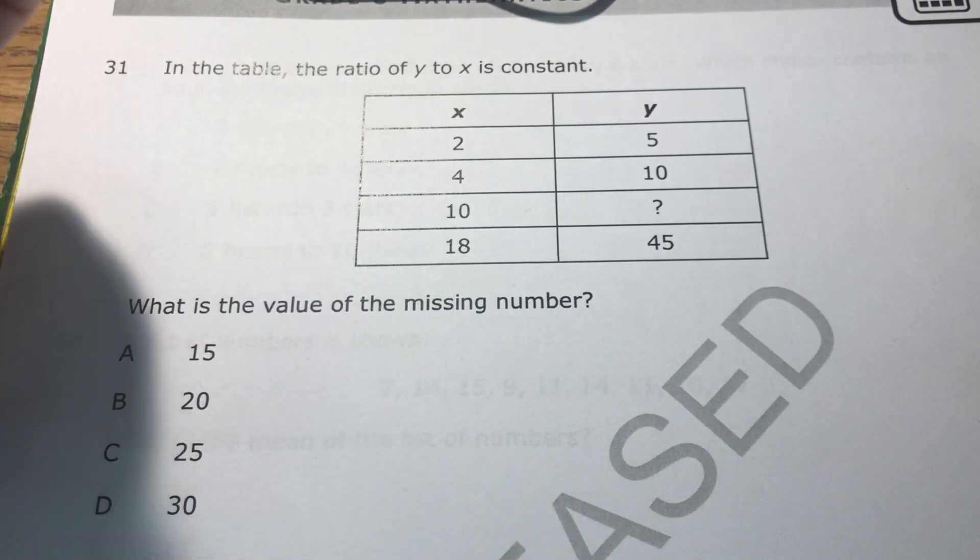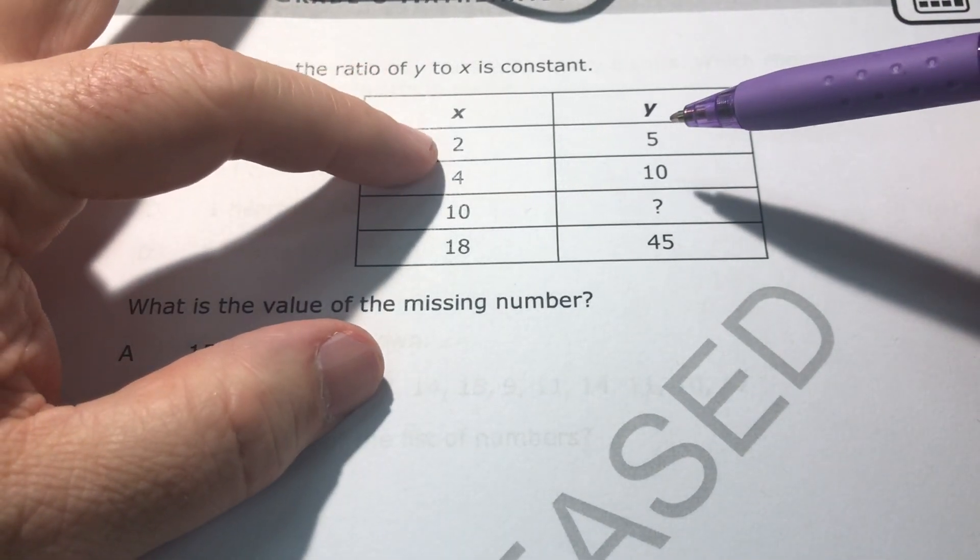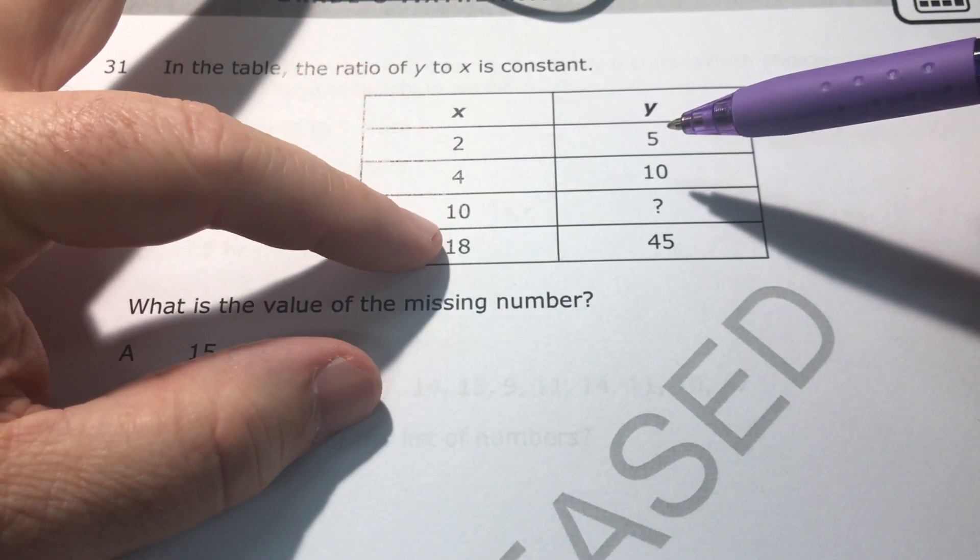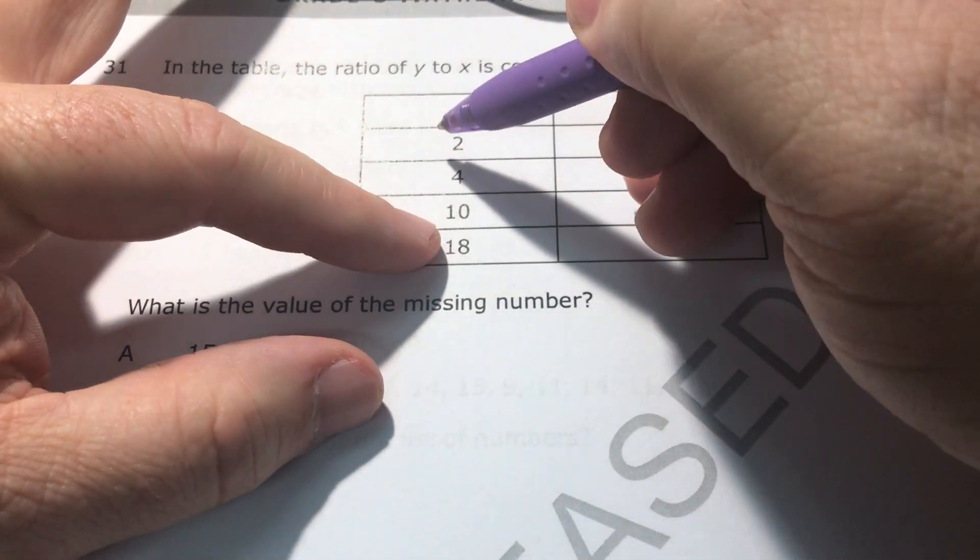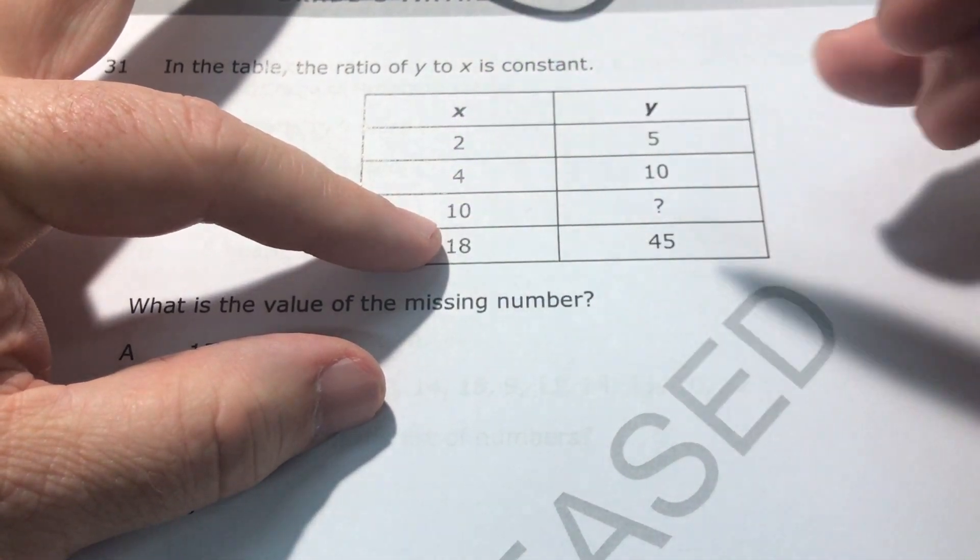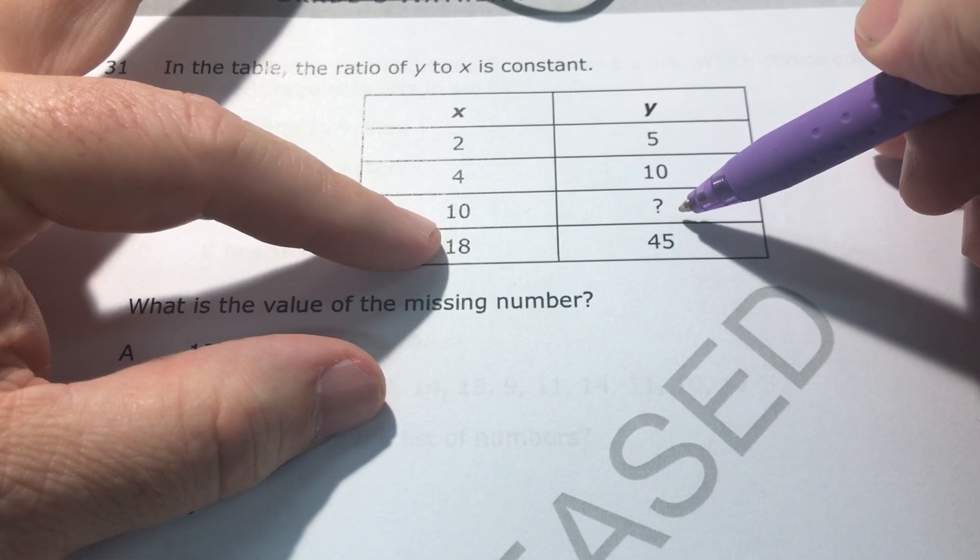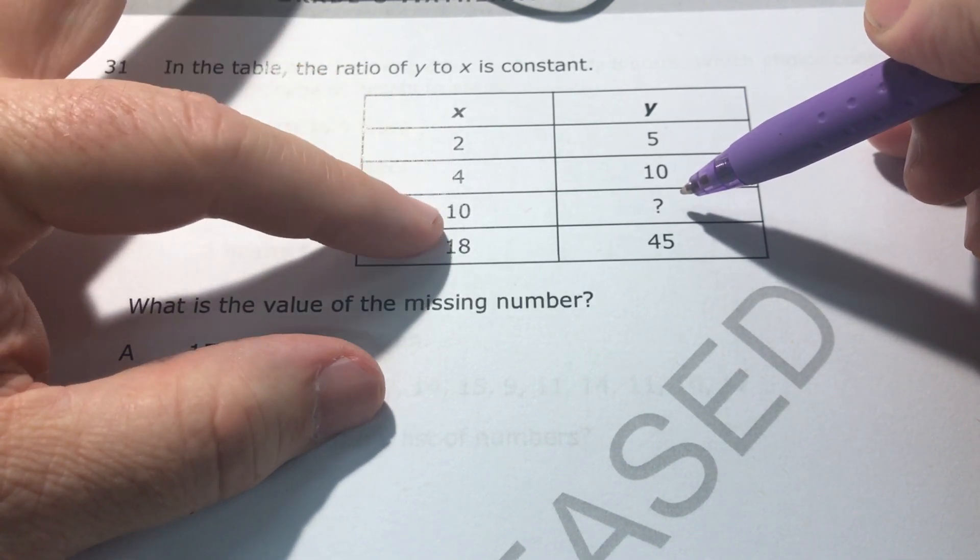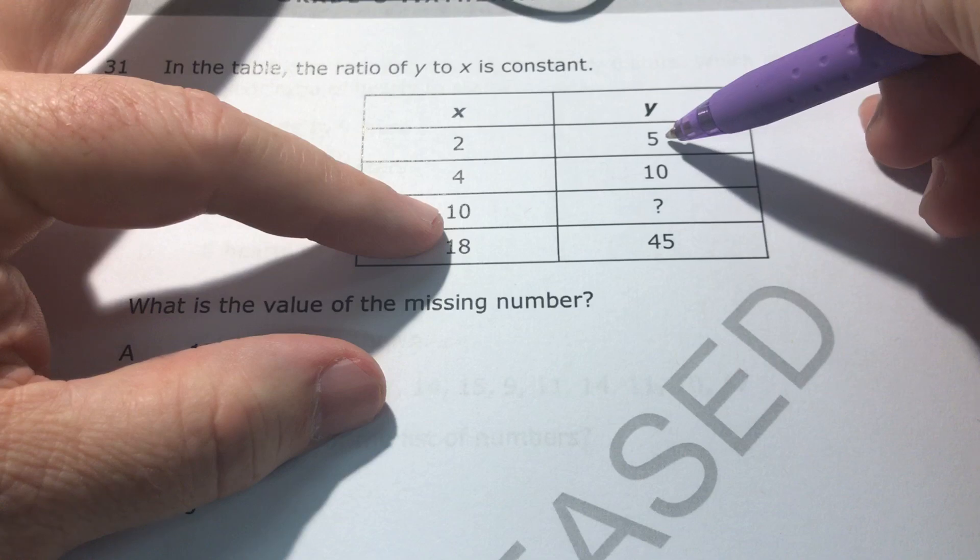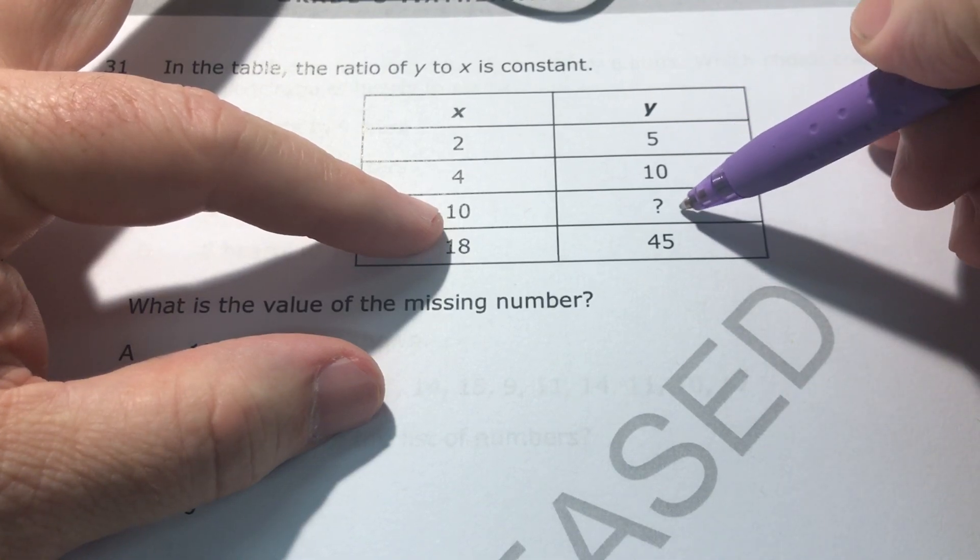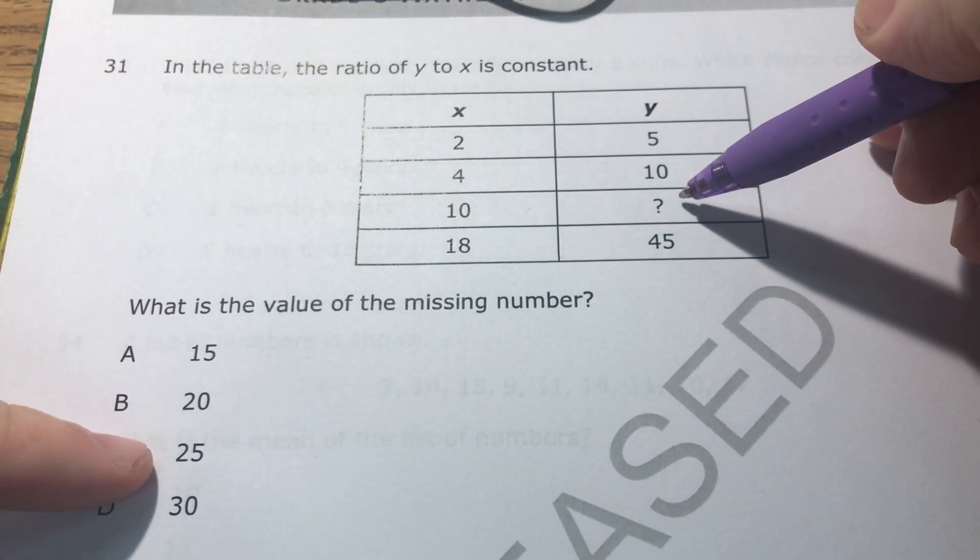But I like to look at it like this, is my favorite way of looking at it. Two will go into ten five times. That means you're multiplying by five going from two to ten. You have to do the same amount to go from five to this unknown number. So since we multiplied by five going from here to here, we're going to multiply by five going from here to here. So five times five is twenty-five.